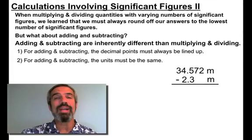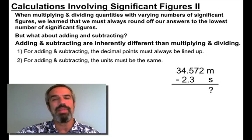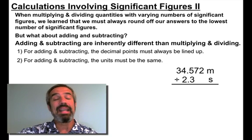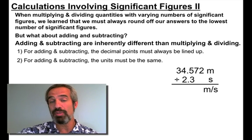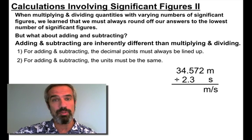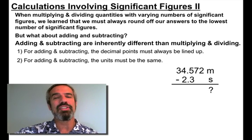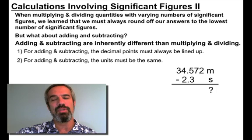For adding and subtracting, the units must be the same. I have to have meters added and subtracted for meters. I can't take meters minus seconds. What would the units be? It wouldn't make any sense. I could take meters divided by seconds, and the units would be meters per second. I could take meters and multiply it by seconds. Meter seconds would be the answer for that. But I cannot take meters and subtract or add seconds. It makes no sense. The units have to agree.